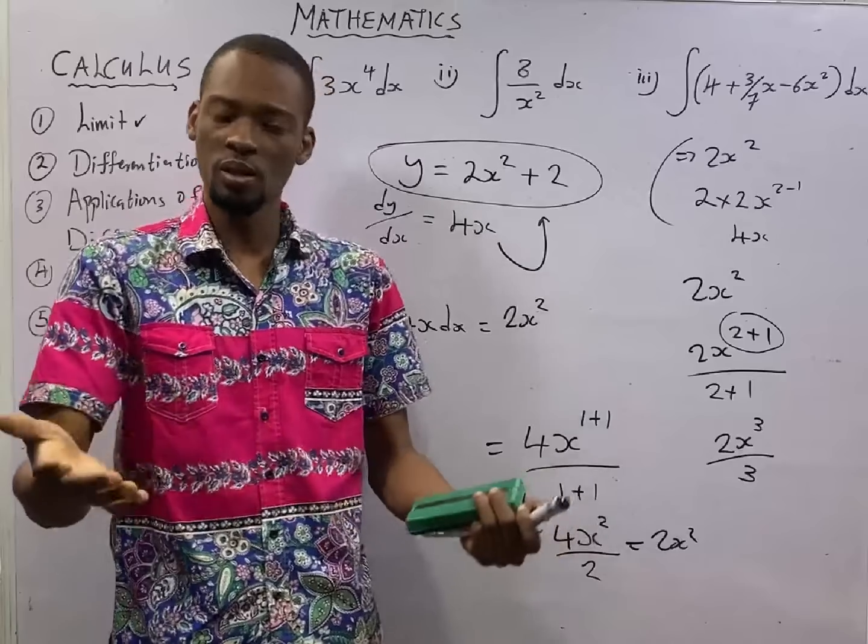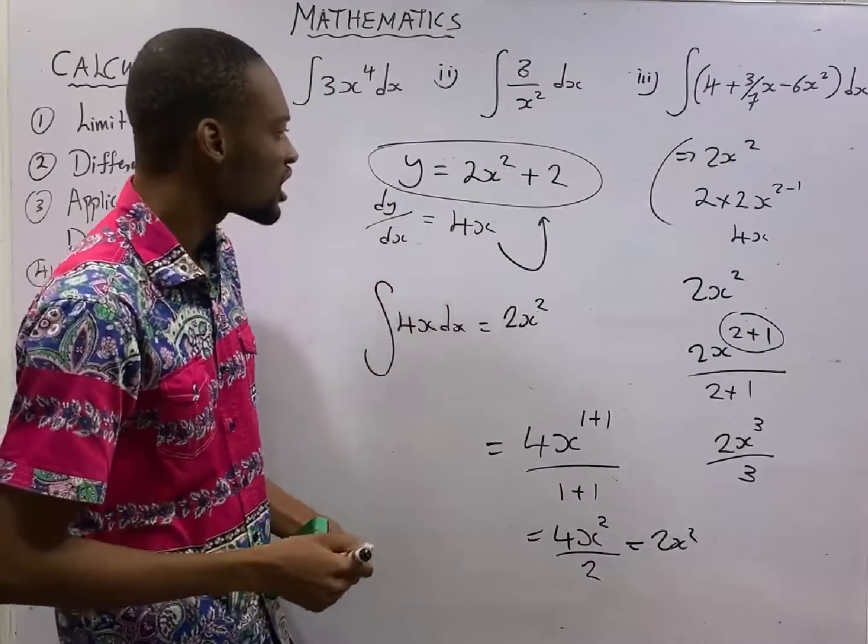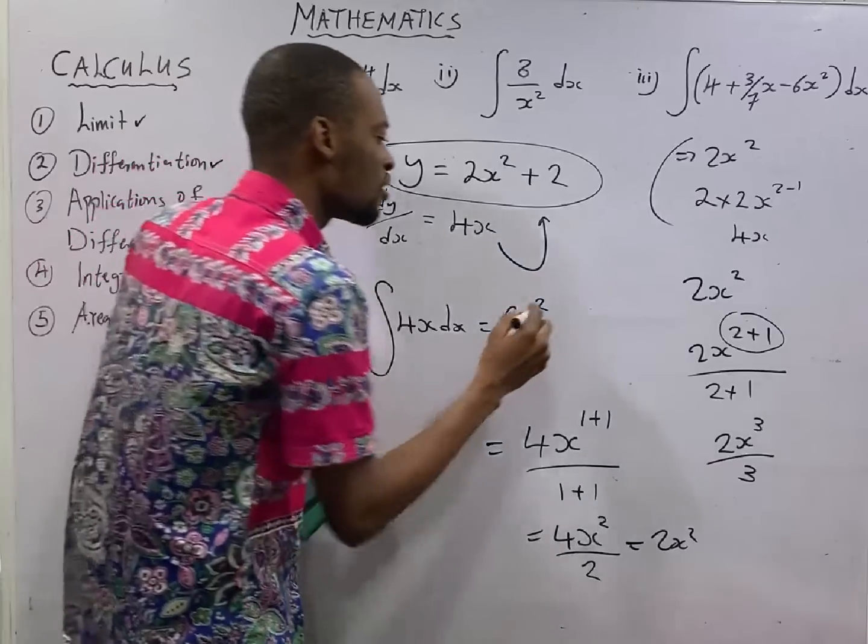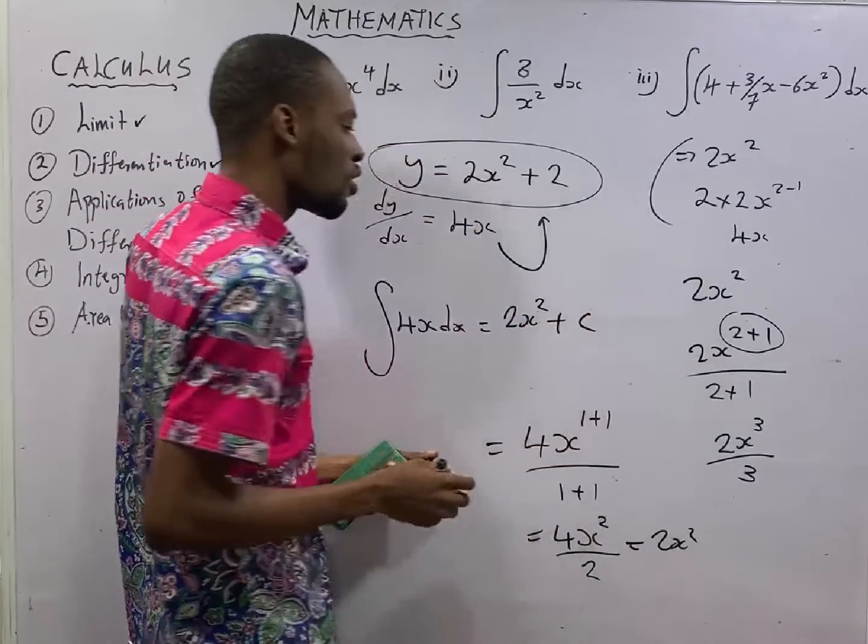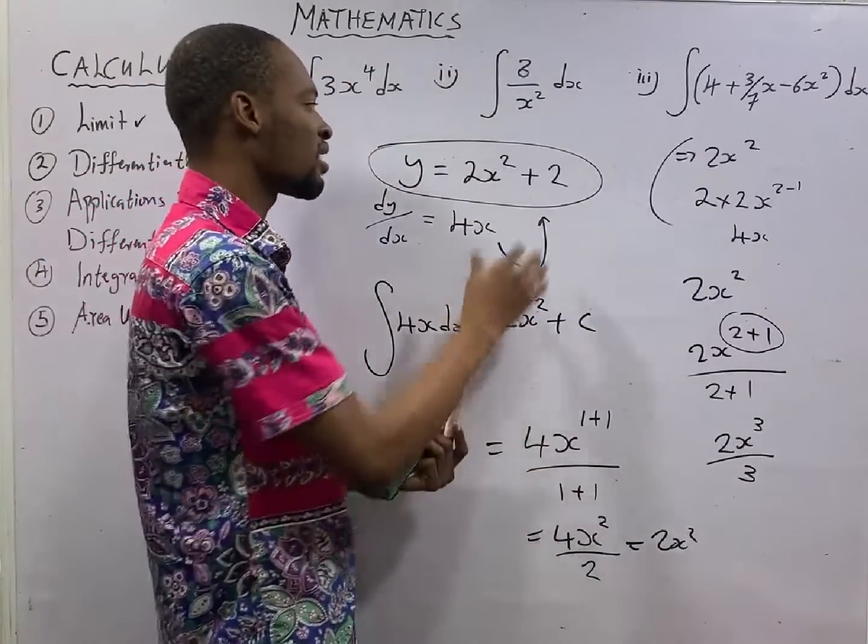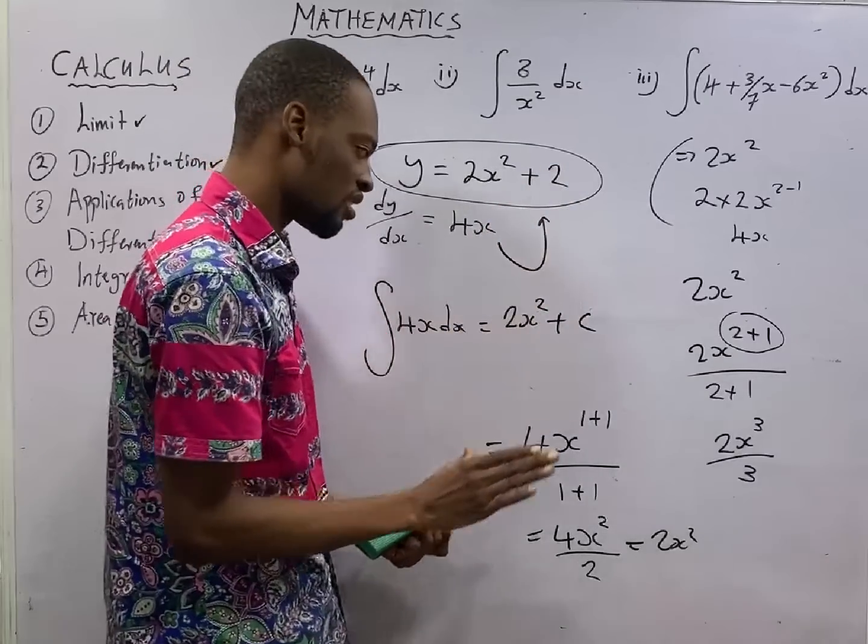Because constant is always lost during differentiation. This is why, after integrating it, you add plus c or plus k to show the constant that was missing during integration.